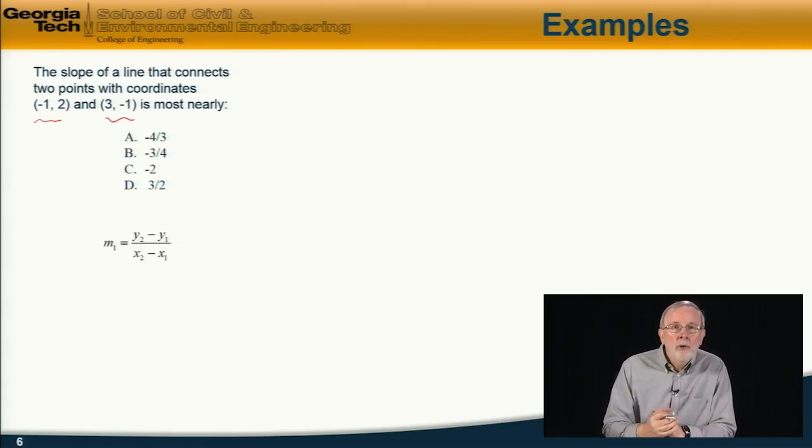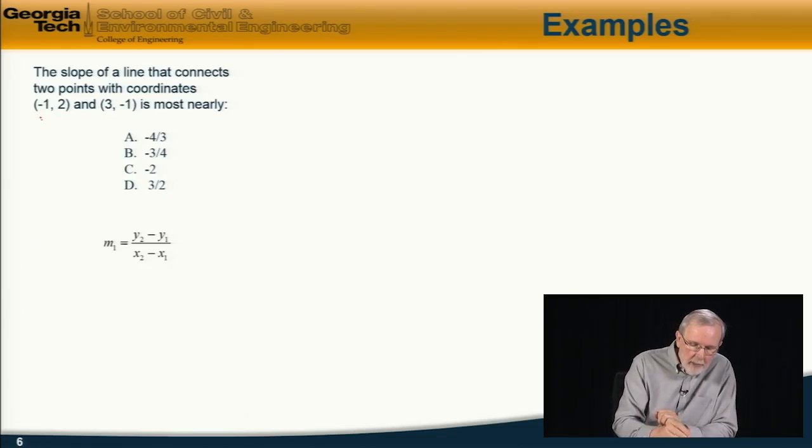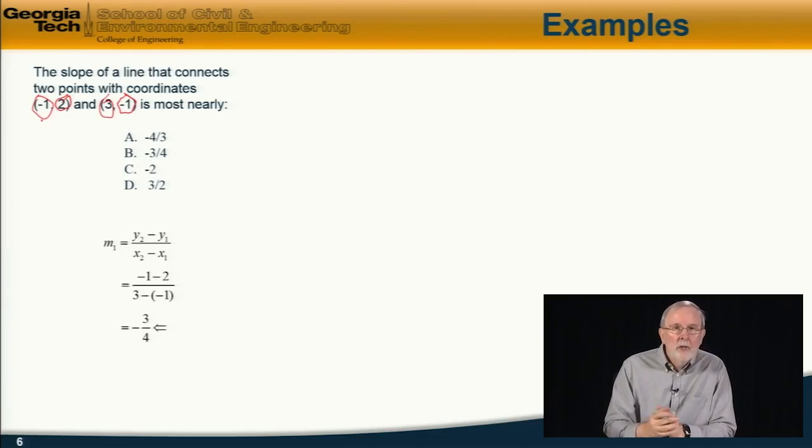So we can compute the slope from this equation that we had on the previous slide, (y2 - y1)/(x2 - x1). So that is therefore equal to y2 is -1, y1 is 2, and in the denominator x2 is 3 and x1 is -1.